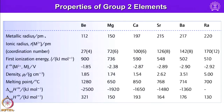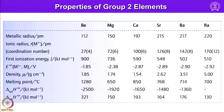Metallic radius increases from beryllium to radium as expected, and ionic radius also increases, from 27 picometers for beryllium to 170 picometers for radium. First ionization energy decreases as valence electrons move further from the nucleus, making their ionization easier. This is also reflected in reduction potential, density, melting point, and enthalpy values, all following expected periodic trends down the group.